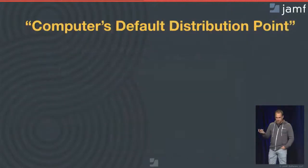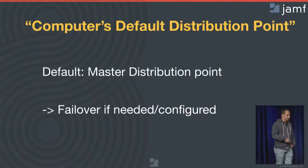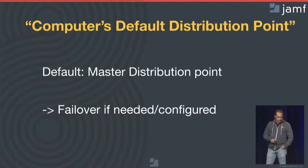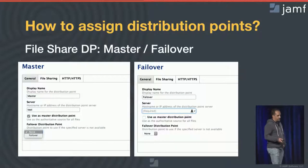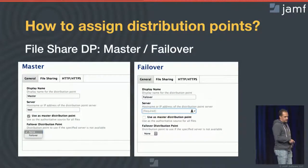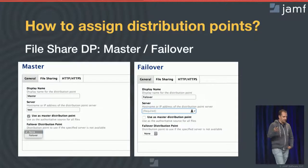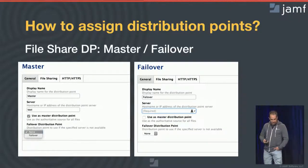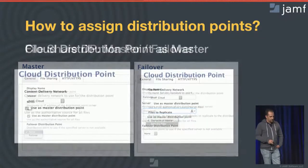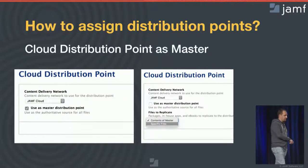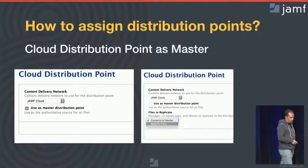What does 'each computer's default distribution point' mean? Well, if you only have one distribution point configured, that's most likely going to be your master and, if needed, redirected to your failover. When setting up local file share distribution points in Jamf Pro, the idea is to first configure your failover distribution point, which will then be available to select on the primary one. One thing to note about cloud distribution points: whether or not you select it as your master doesn't change anything — you can't select a failover, and you can't set cloud as a failover for a local file share.